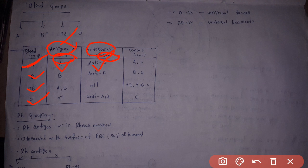In A blood group, RBC has A antigen and plasma has B antibodies. In B blood group, RBC has B antigen and plasma has A antibodies.